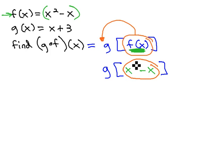Inside g is the x squared minus x. So we can grab all that and plug it into the g function. In the g function, replacing the x with the entire expression. Instead of x plus 3, it's now x squared minus x plus 3.